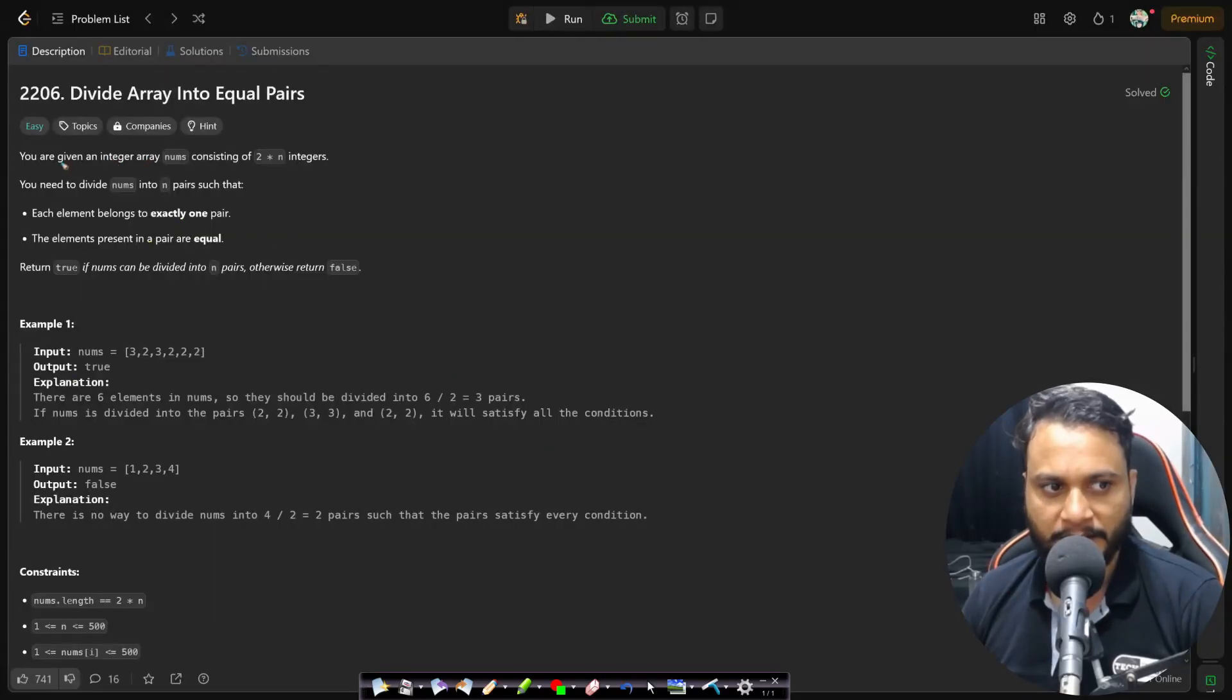The problem statement says you are given an integer array nums consisting of 2n integers. You need to divide nums into n pairs such that each element belongs to exactly one pair and the elements present in a pair are equal. Return true if nums can be divided into n pairs, otherwise return false.